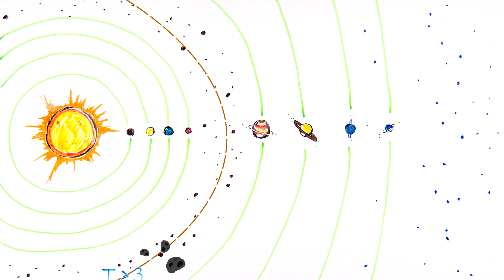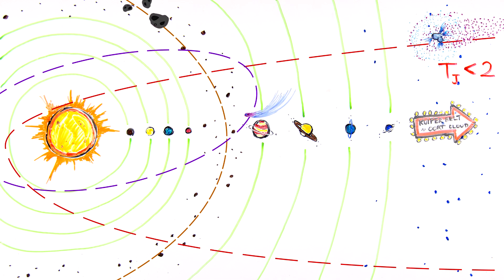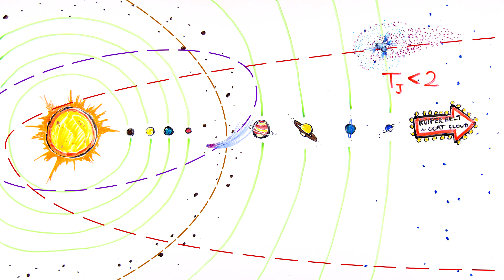Asteroids typically have T greater than 3, and Jupiter family comets have T greater than 2, but less than 3, and may be from the scattered disk. Long period comets, mainly from the outer Oort cloud, have T less than 2.